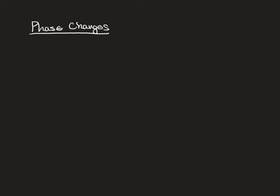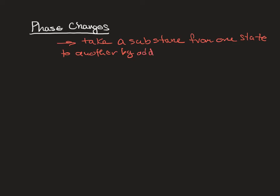In this section of notes, we are going to discuss phase changes and how much energy you need to change the phase of a particular substance. A phase change is when you go from one state to another — you take a substance from one state to another by adding or removing energy.